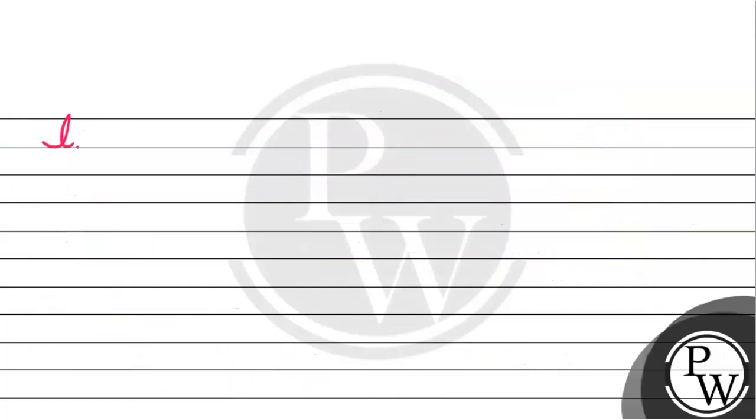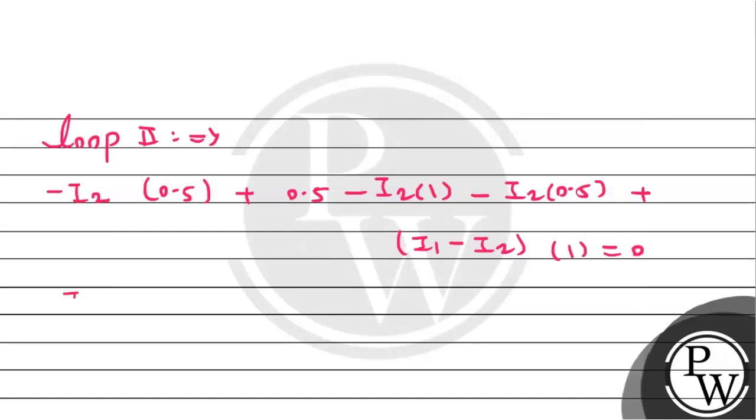Now for loop 2, applying KVL: minus I2 times 0.5 plus 0.5 volt minus I2 times 1 minus I2 times 0.5 plus (I1 minus I2) times 1 equals zero. We get another equation: 3I2 minus I1 equals minus 0.5. This is equation 2.